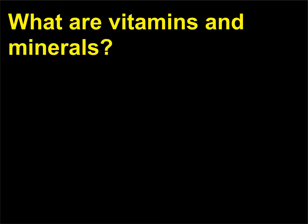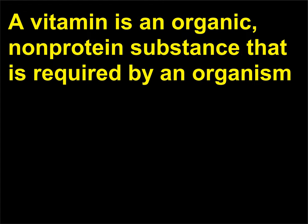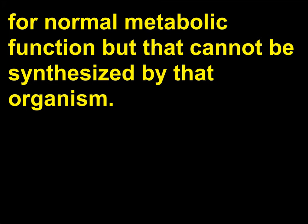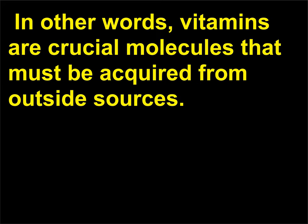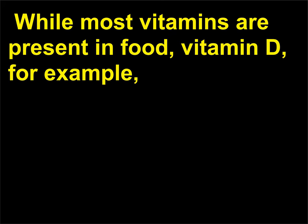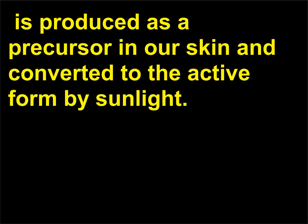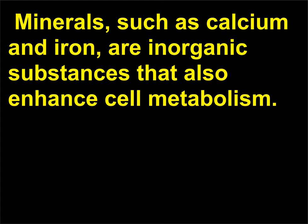What are vitamins and minerals? A vitamin is an organic, non-protein substance that is required by an organism for normal metabolic function but that cannot be synthesized by that organism. In other words, vitamins are crucial molecules that must be acquired from outside sources. While most vitamins are present in food, vitamin D, for example, is produced as a precursor in our skin and converted to the active form by sunlight. Minerals, such as calcium and iron, are inorganic substances that also enhance cell metabolism.